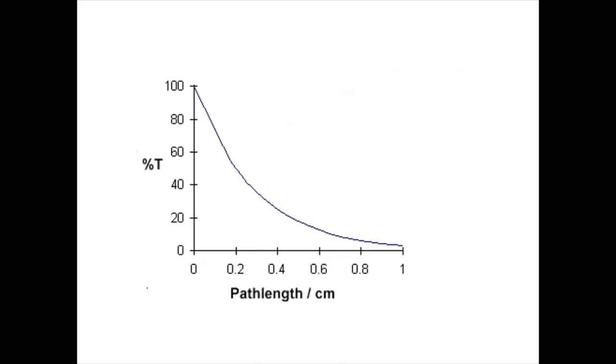That is percentage transmittance. You can see if the light is initially not absorbed, it means it is hundred percent transmitted. If the substance does not absorb the light, it means hundred percent transmission is there.